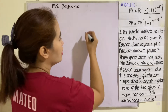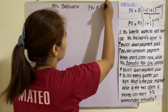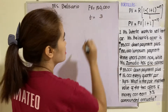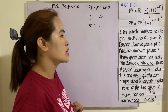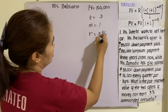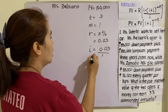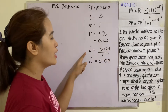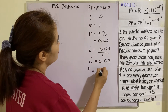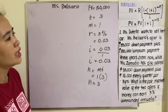For Miss Belisario's offer, let's identify the given: FV equals 150,000; t equals three years; m equals one because it is a lump sum; r equals three percent or 0.03. Therefore i equals 0.03 divided by 1, so i equals 0.03. For n, we have m times t, which is 1 times 3, giving n equals 3.